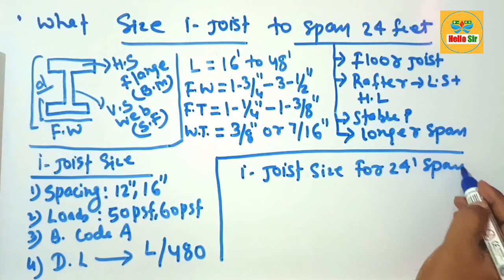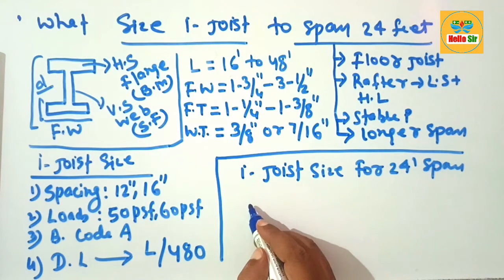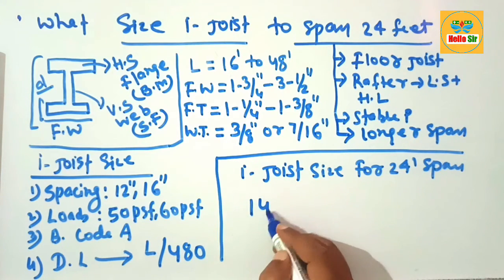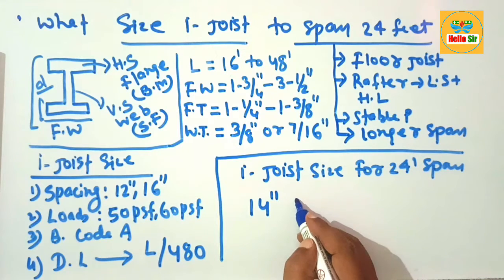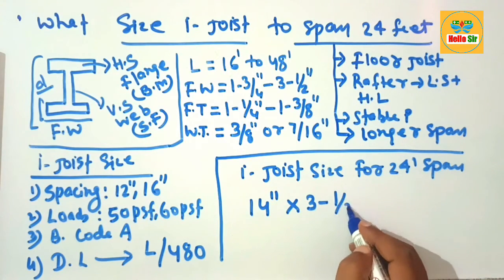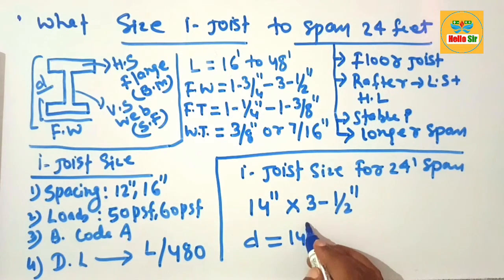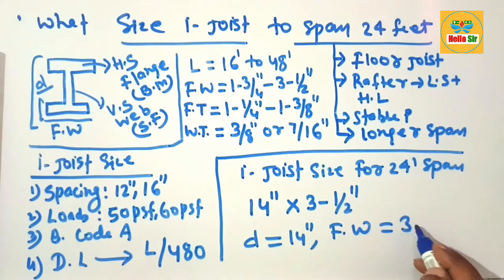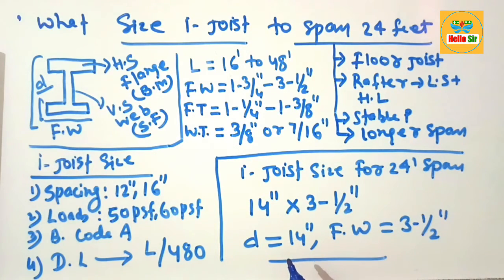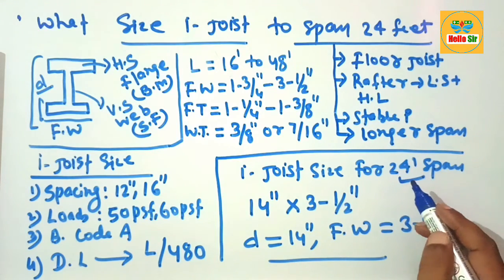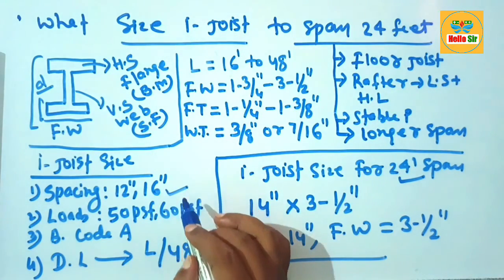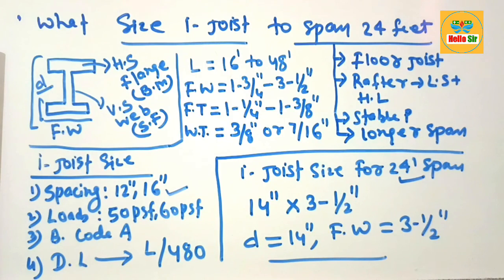The I-joist size required to span 24 feet should be 14 inches deep and 3.5 inches flange width. The depth is about 14 inches and the flange width is about 3.5 inches. This size of I-joist is required to span 24 feet at 16-inch center spacing. Thank you.